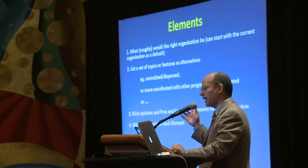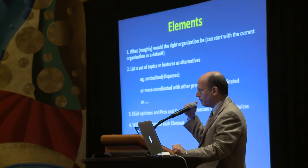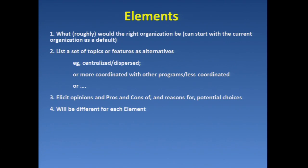Here is the idealized scheme. You start with roughly the right organization for each topic — you could start with the current organization as a default, or start with a generality based on what you heard this morning, and then list a set of topics or features that could be alternatives. For example, centralized versus dispersed, or as Bill brought up, siloed versus unified. There are reasons we silo things organizationally. But many of these are false dichotomies — what we should focus on is the features we want to keep from each of those.